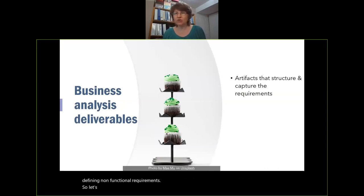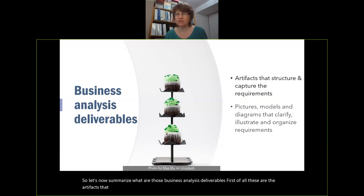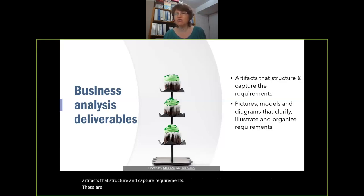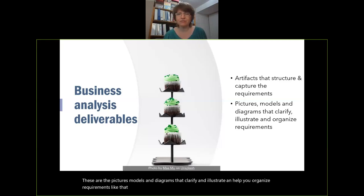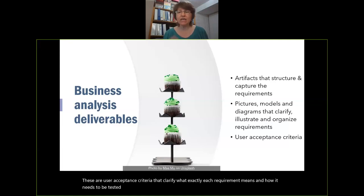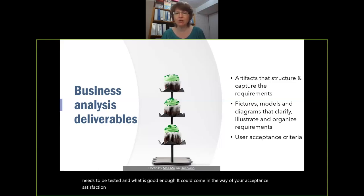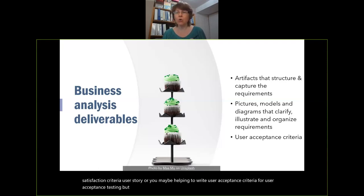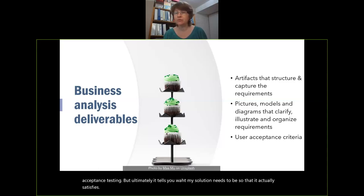Let's summarize what are the business analysis deliverables. First, these are the artifacts that structure and capture requirements — the pictures, models, and diagrams that clarify, illustrate, and help you organize requirements, like a user story map. These are user acceptance criteria that clarify what exactly each requirement means, how it needs to be tested, and what is good enough — it tells you what my solution needs to be so that it actually satisfies my needs and helps me solve my problem.